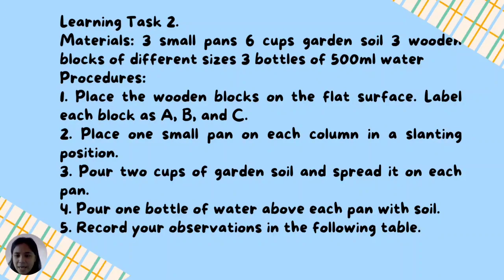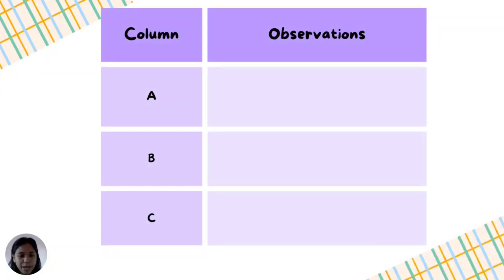Use substitutes like what was used in the experiment you are going to watch. Put your answers or observations in the table with columns A, B, and C and observations. Now let us watch the video about that activity.